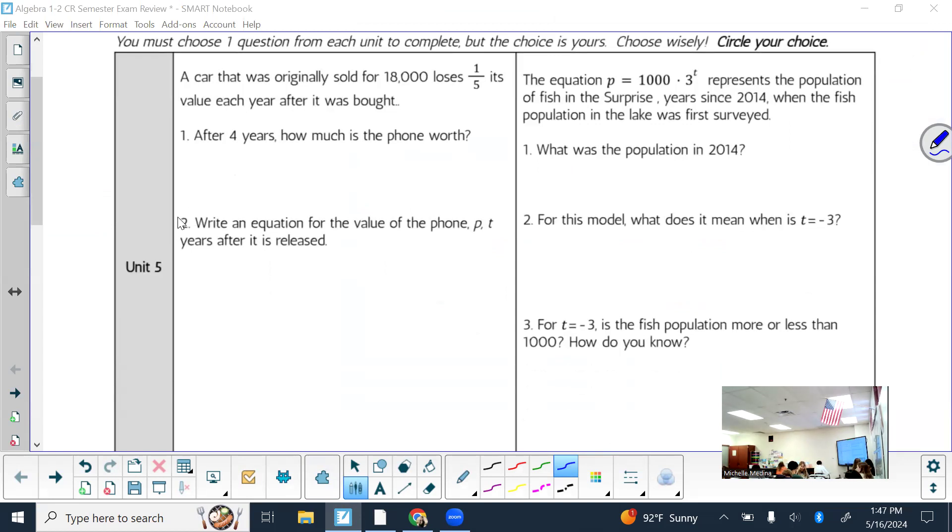For Unit 5, Part 1: A car that was originally sold for $18,000 loses one-fifth of its value each year after it was bought. After four years, how much is the car worth? Unit 5 was probably the best unit as far as grade averages, but it was a long time ago. Unit 5 was exponential functions. So knowing that, maybe that can help you set up a way to solve this one.